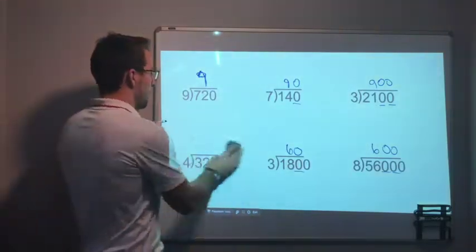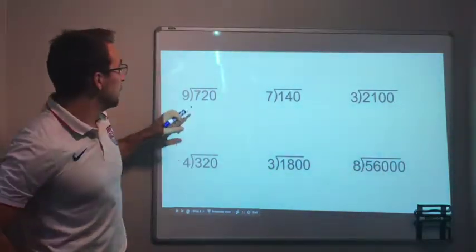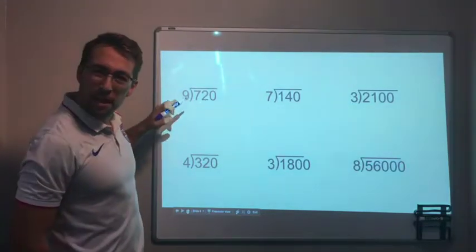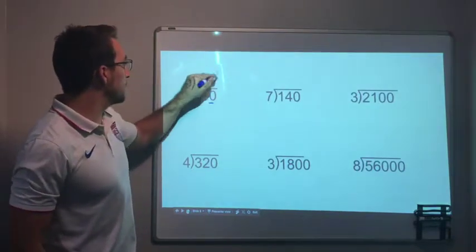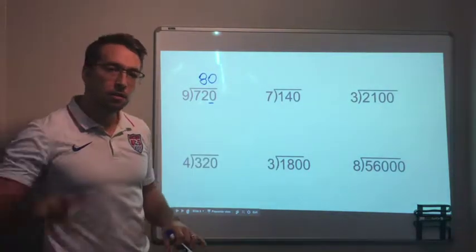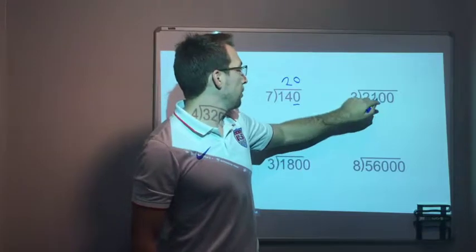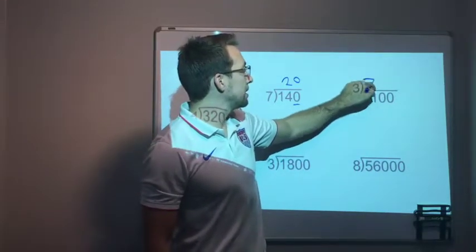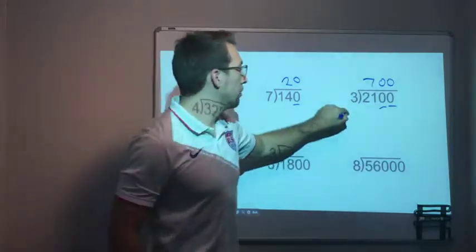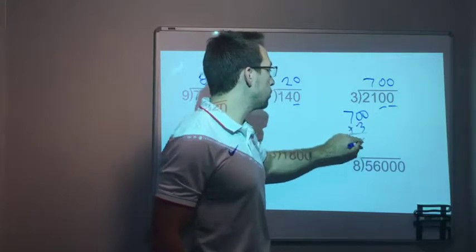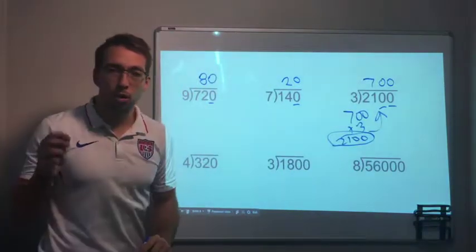We've got to know our times tables always. 720 divided by 9: 72 divided by 9 is 8, add one zero — 80. 140 divided by 7: 14 divided by 7 is 2, add one zero — 20. 2100 divided by 3: 21 divided by 3 is 7, with two zeros — 700. And we can verify: 700 times 3 equals 2100. It works every time.